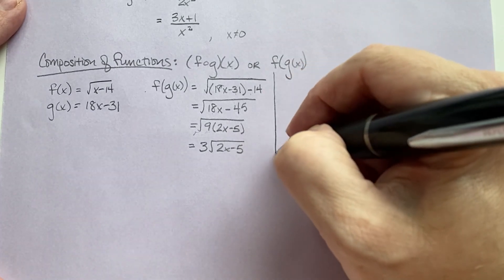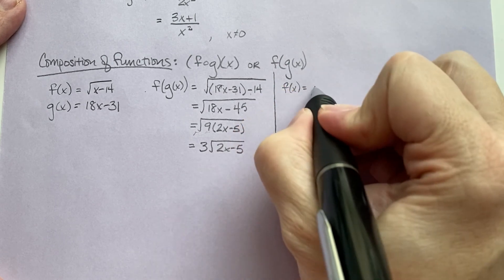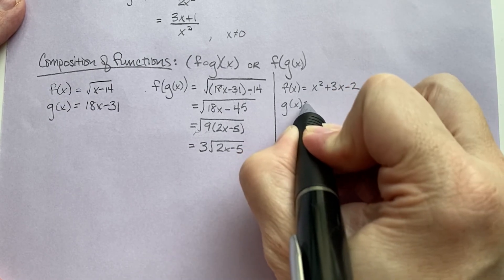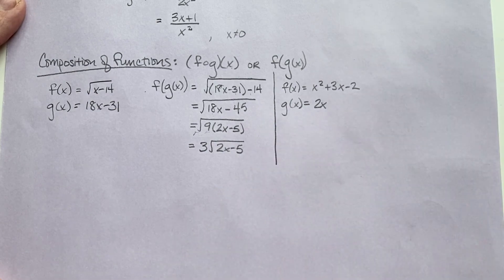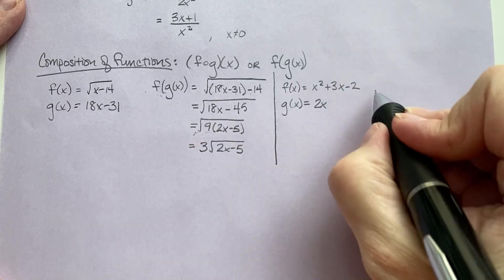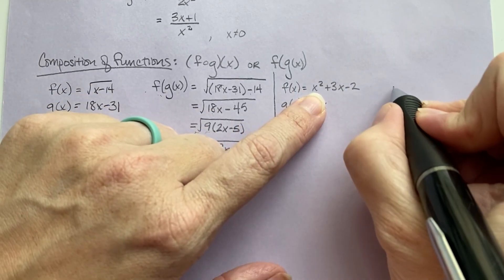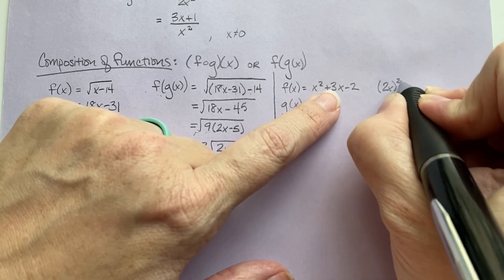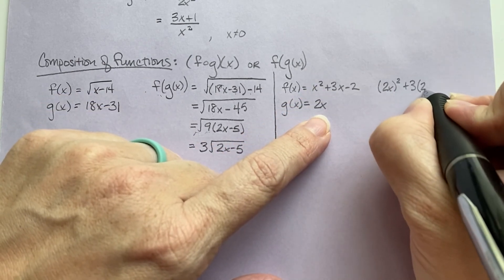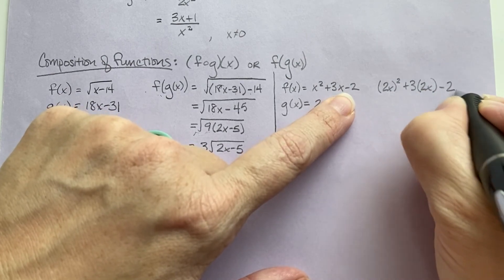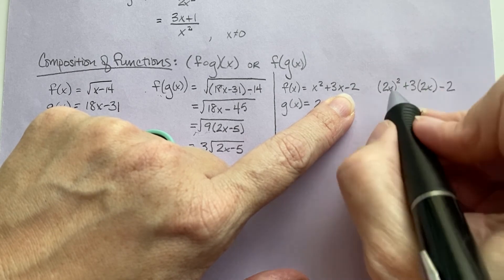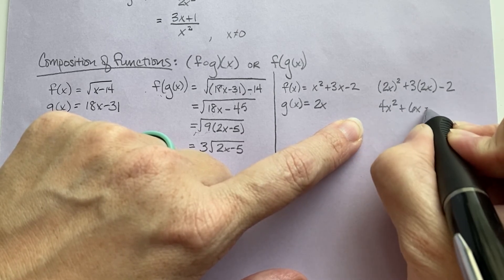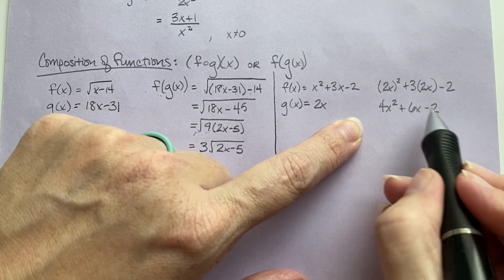Now let's say f of x is x squared plus 3x minus 2 and g of x is 2x. We're still doing f of g of x. We start writing the f function and when we get to an x, we input the g function: (2x) squared plus 3(2x) minus 2. Now reduce: (2x) squared gives us 4x squared, 3 times 2 gives us 6x, minus 2. Nothing can be combined, so 4x squared plus 6x minus 2 is our composite function.